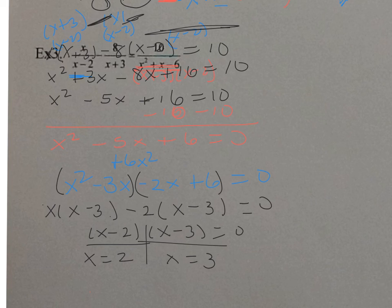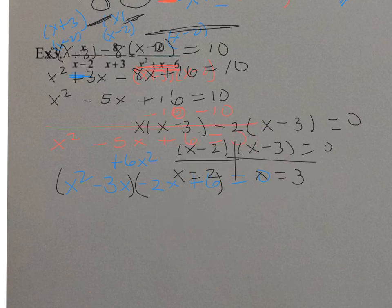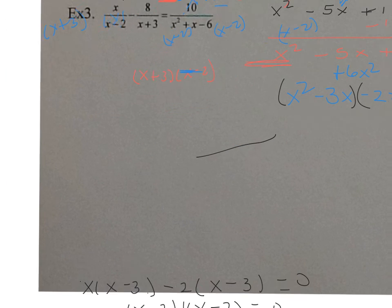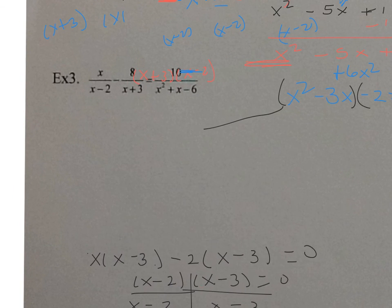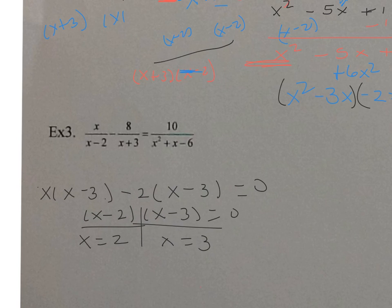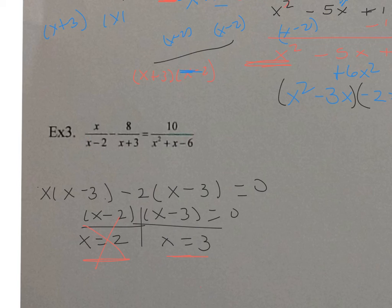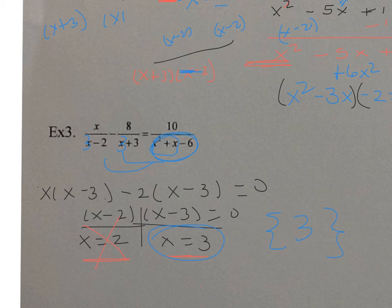Remember, you want to check this to make sure it works. Let me move this so I can see my equation. Here's my solutions: x equals 2 and x equals 3. But notice when I plug in 2, I get 2 minus 2 is zero - I have a zero in the denominator, so it's undefined. I have to cross that off - that's an extraneous root. Now let's try 3: 3 minus 2 is 1, that's good; 3 plus 3 is 6, that's good. And since these are the factors of that denominator, I don't need to check that - it's good. So therefore my only solution, my solution set is 3.